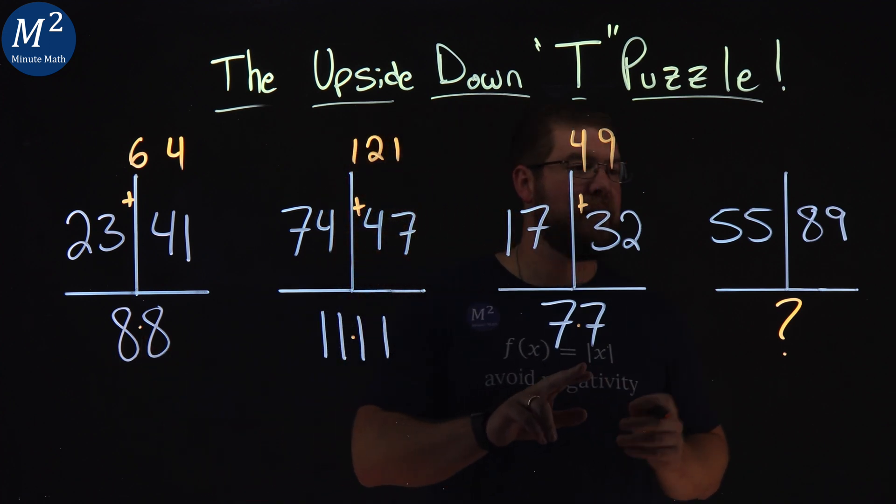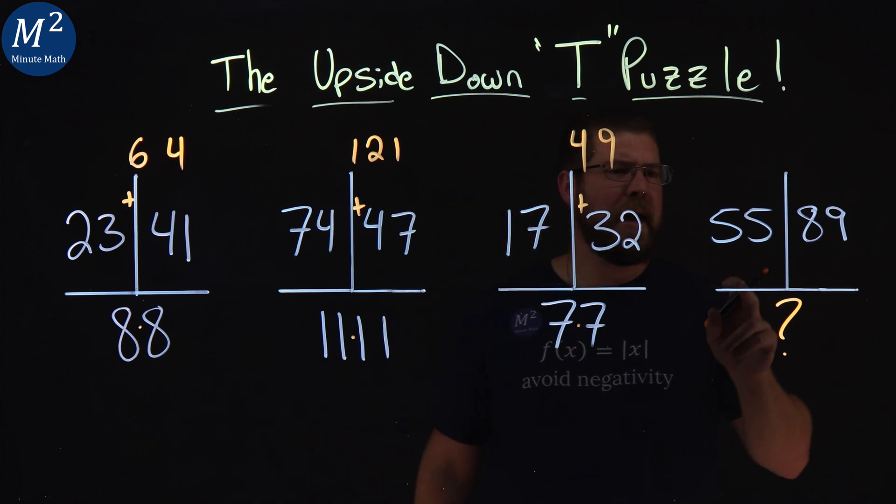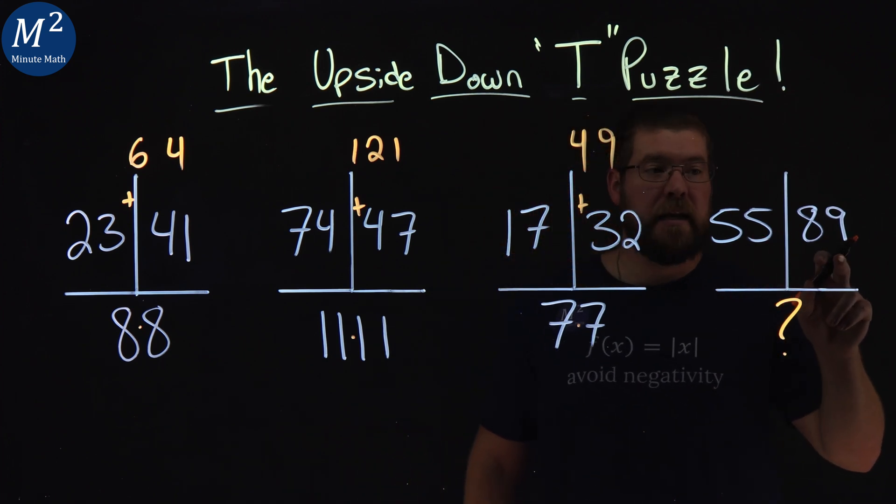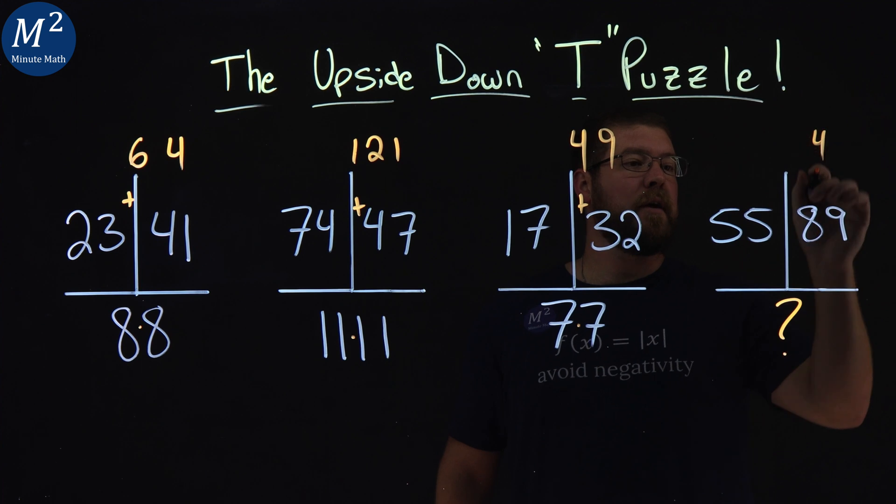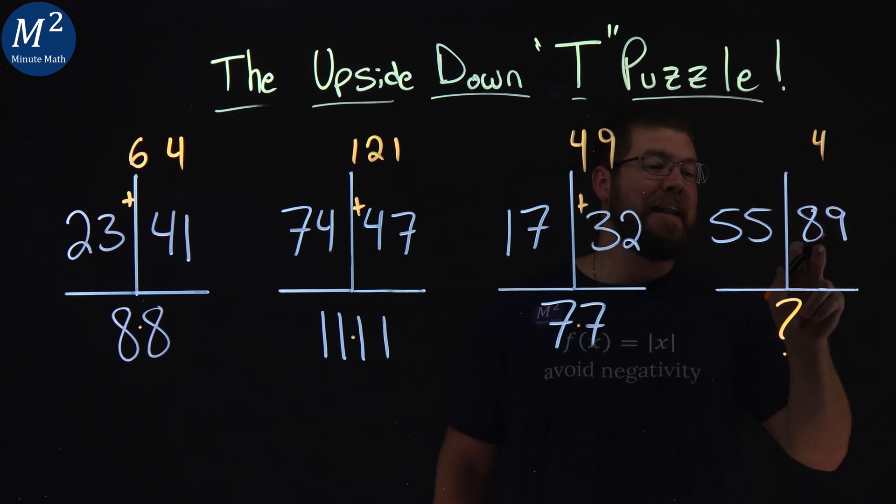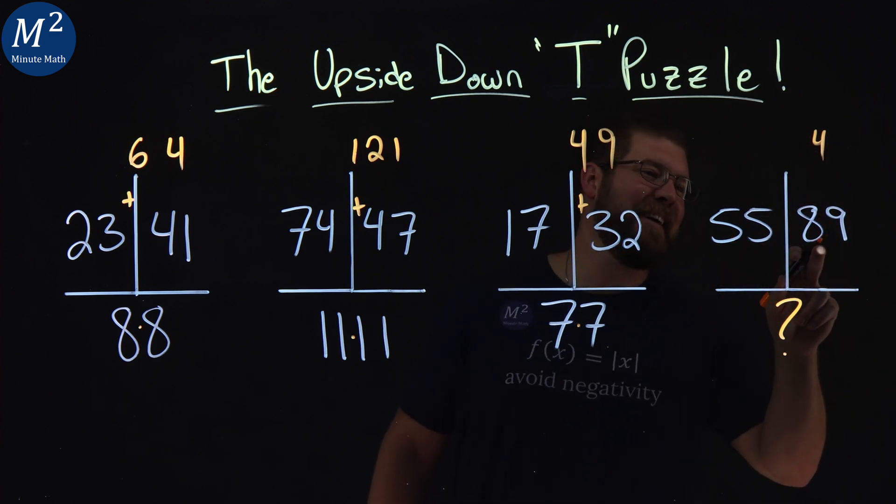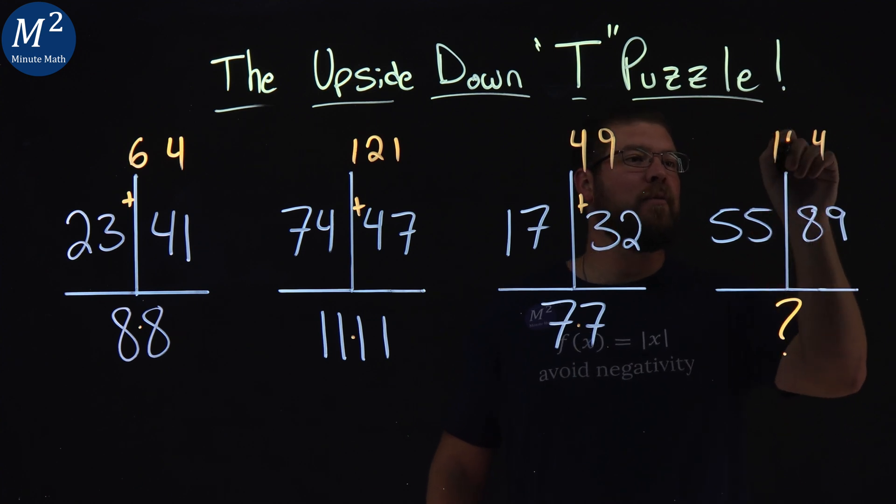8, 8, 11, 11, 7, 7. Let's see the last one. What do we have? 55 plus 89. 9 and 5 is 14, carry the 1.